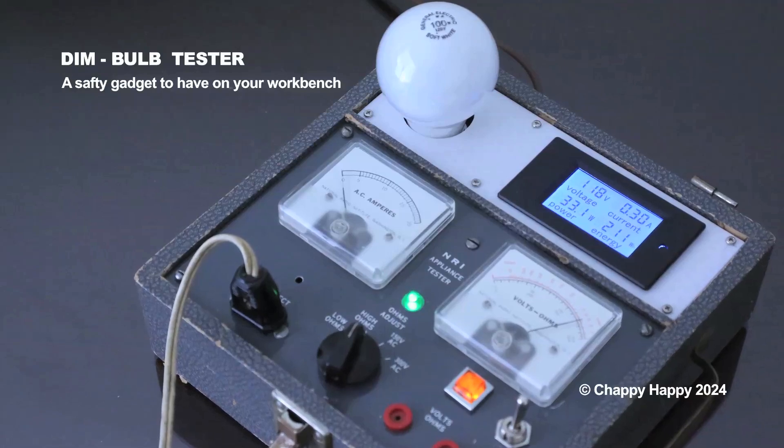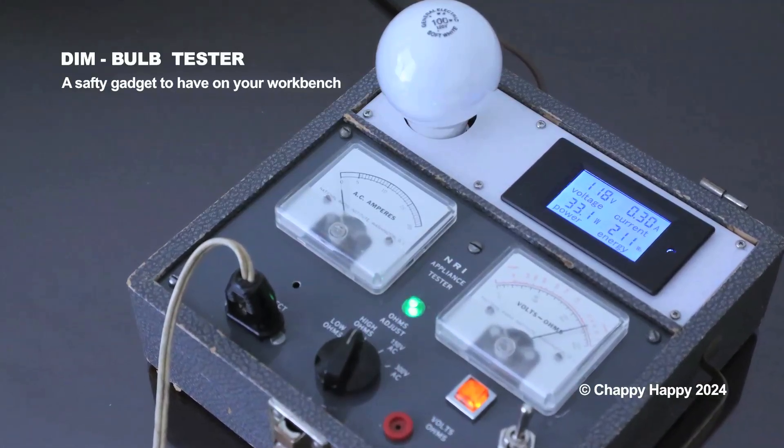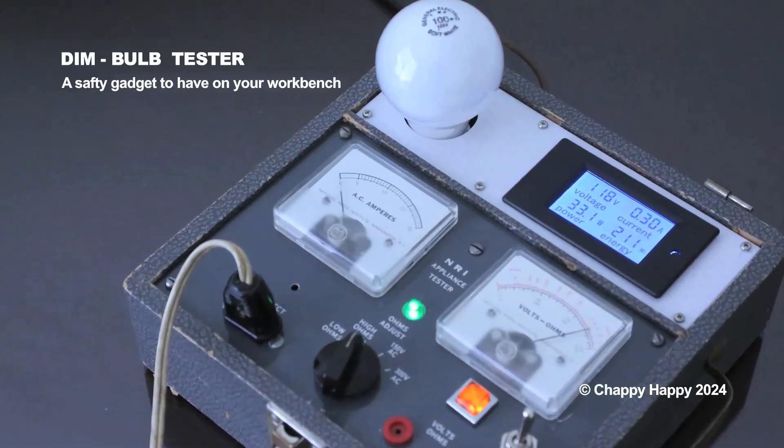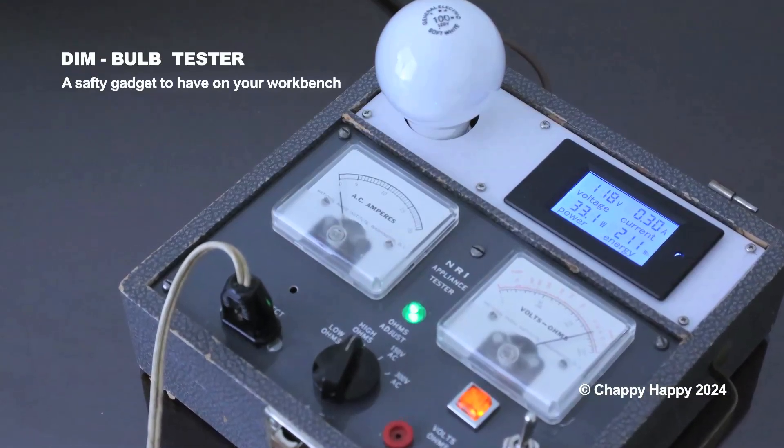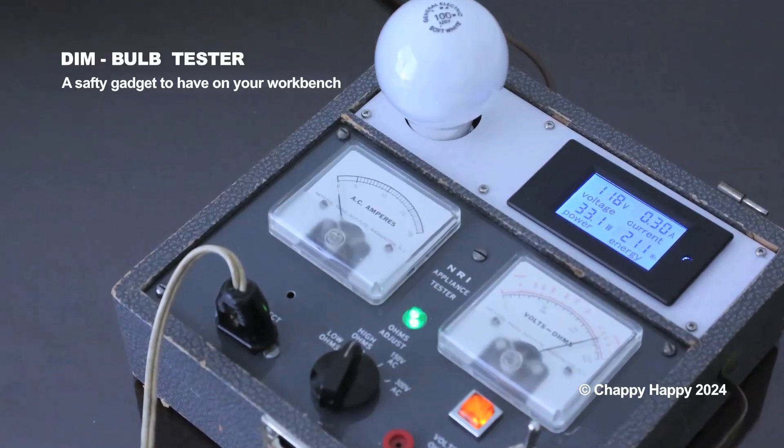This is the Dim Bulb Tester I made. I used some parts from the vintage appliance tester which I got at local flea market.